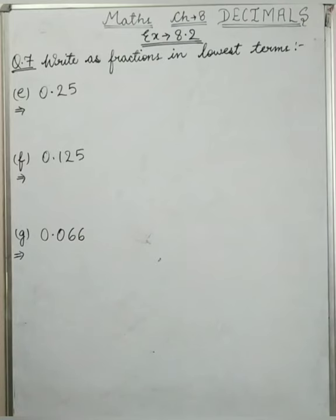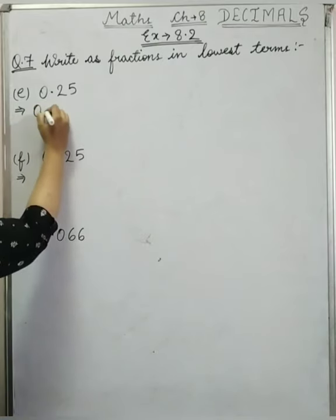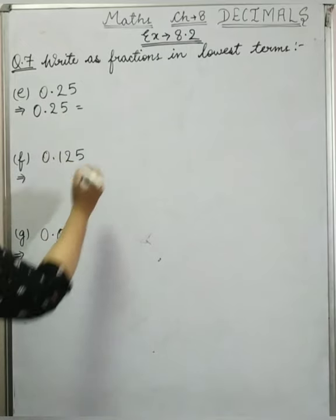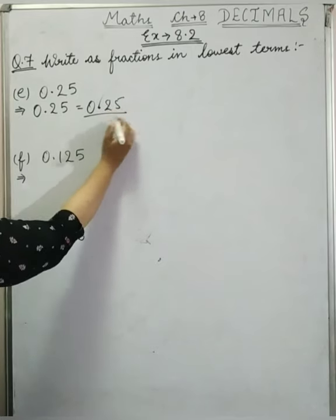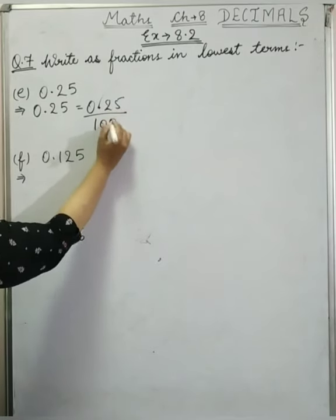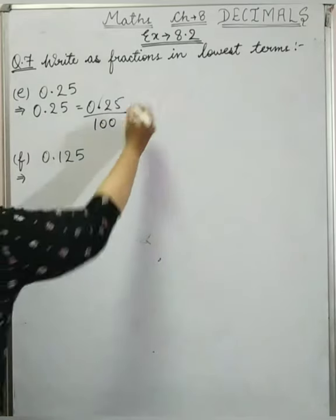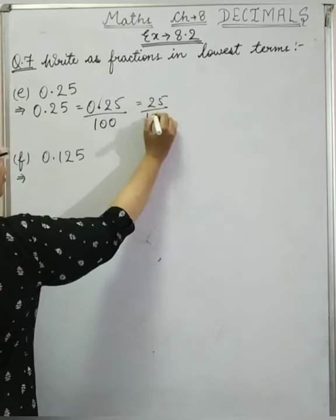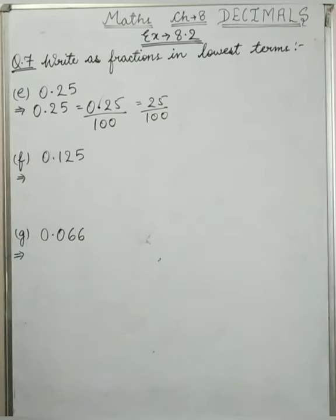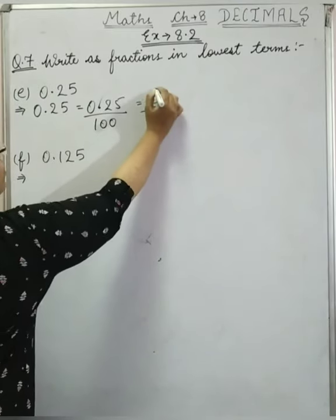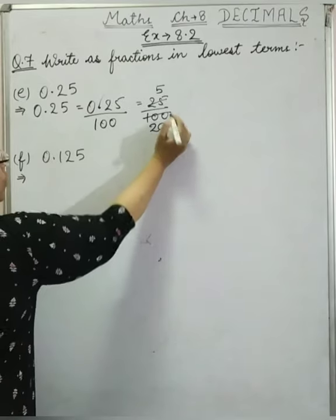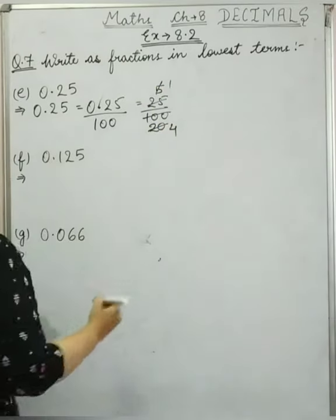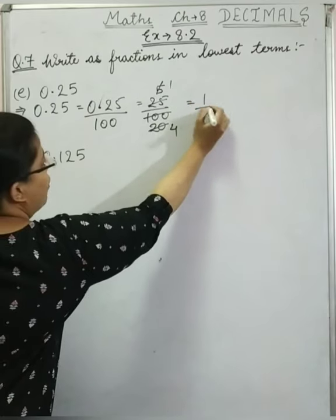Now next is e: 0.25. We convert it to a fraction. After the decimal there are 2 digits, so 2 zeros in the denominator: 25 upon 100. We reduce using the 5 times table: 5 times 5 is 25, and 5 times 20 is 100, giving 5 upon 20. Again dividing by 5: 5 upon 5 is 1, and 5 times 4 is 20. So the answer is 1 upon 4.